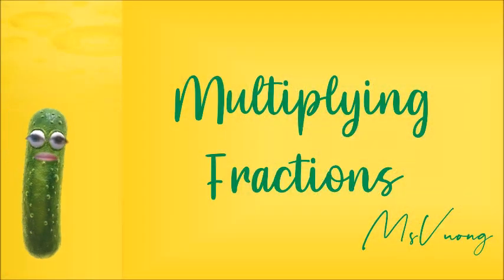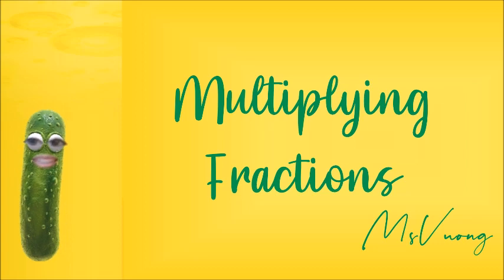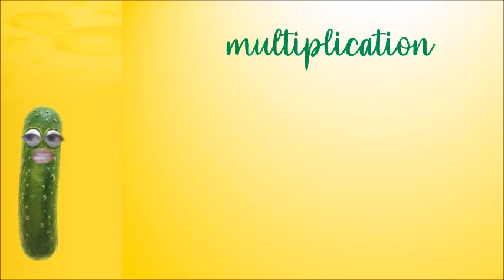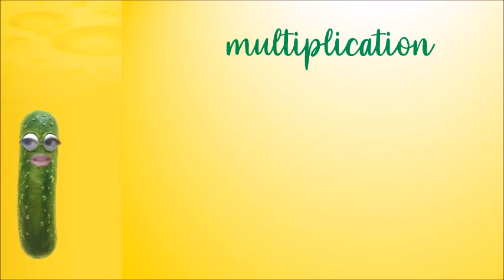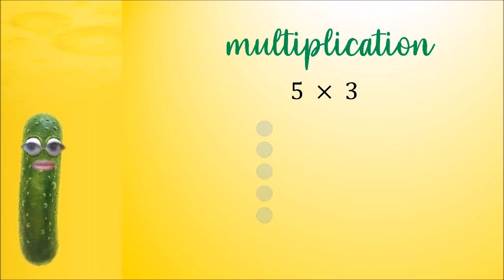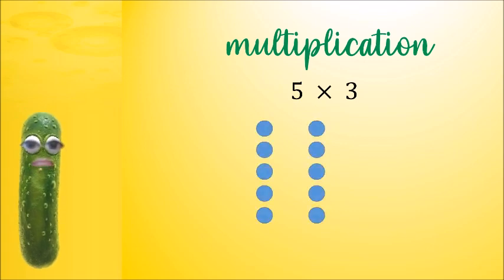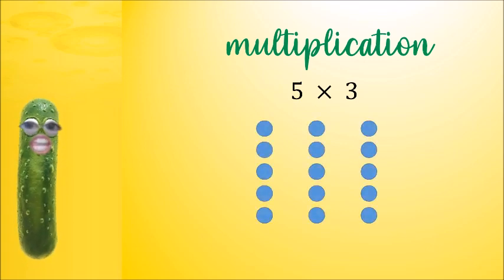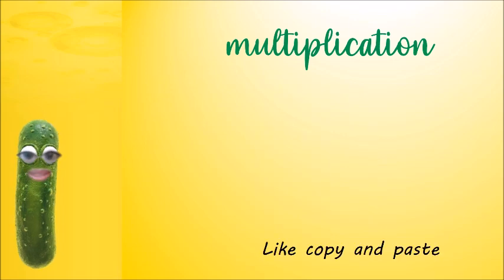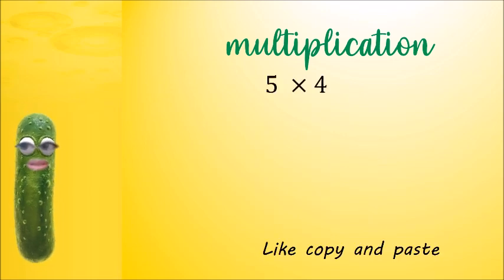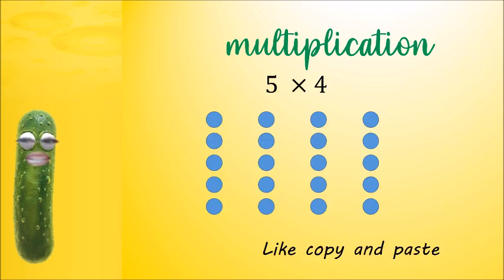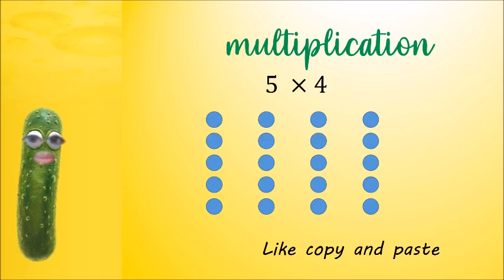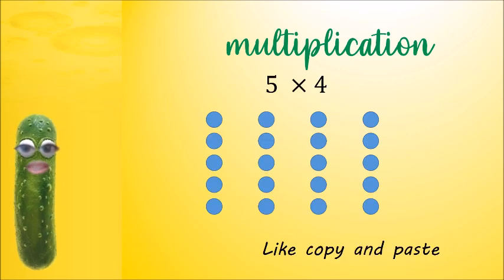So multiplying fractions. You already know a bit about multiplication. For instance, 5 times 3 is 5 plus 5 plus 5 — it's like you copy-paste it 3 times. 5 times 4 is like 5 plus 5 plus 5 plus 5 — it's like you copy-paste it 4 times.